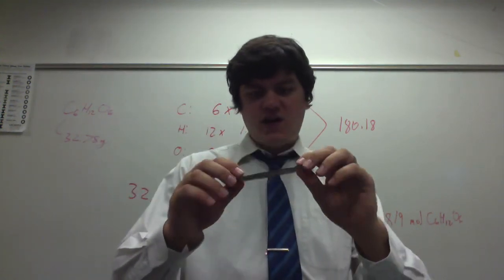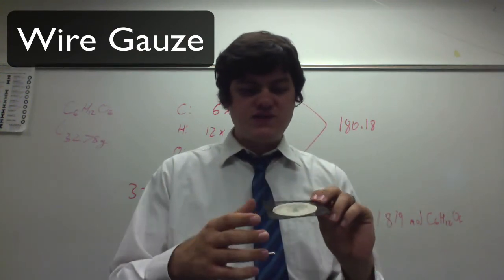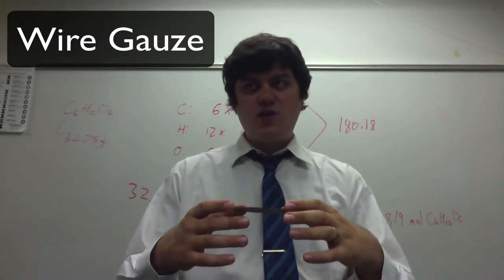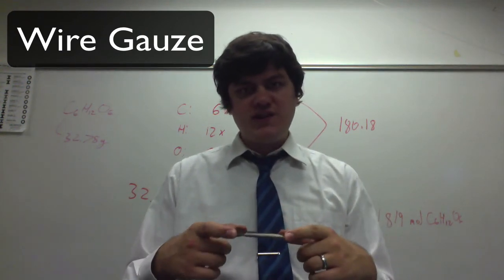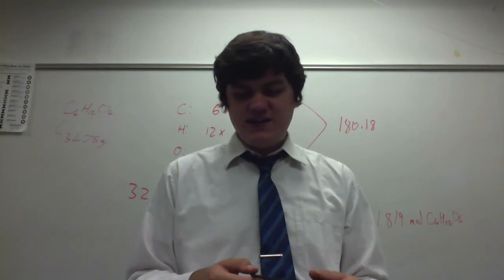This is wire gauze. You'll notice that it does have some white material in the middle and that's very important. We set these over a ring clamp when we're heating something with a Bunsen burner because it helps distribute the heat evenly.